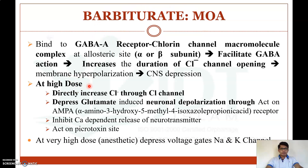At high doses, barbiturates directly increase chloride ion influx through chloride channel opening and depress glutamate-mediated neuronal depolarization through the AMPA receptor (alpha-amino-3-hydroxy-5-methylisoxazolepropionic acid receptor). They also inhibit calcium-dependent release of neurotransmitters, act at the picrotoxin site, and at very high or anesthetic doses depress voltage-gated sodium and potassium channels.